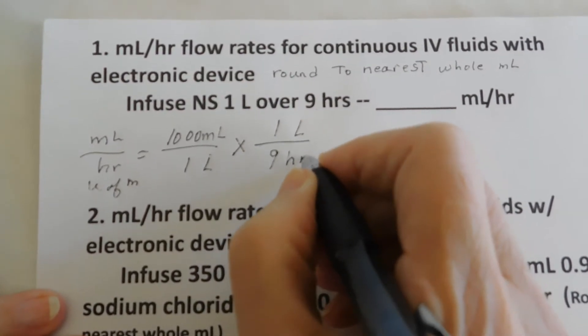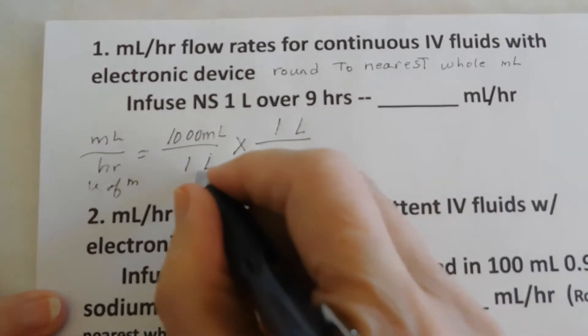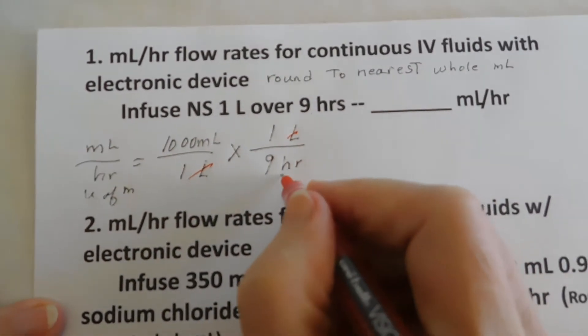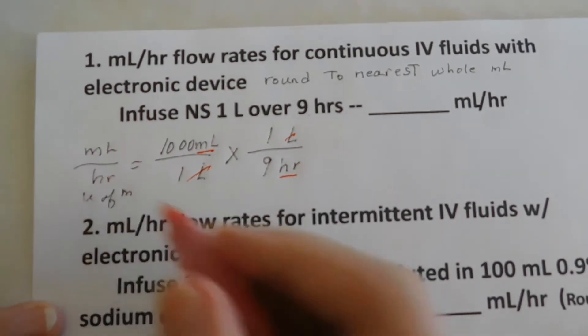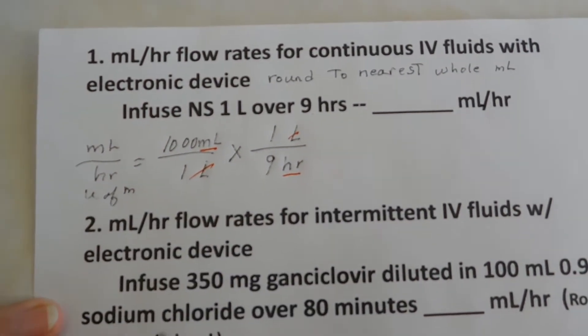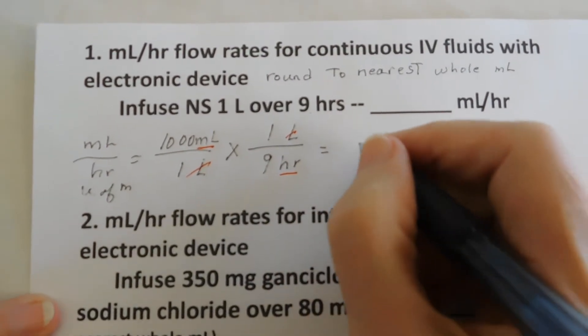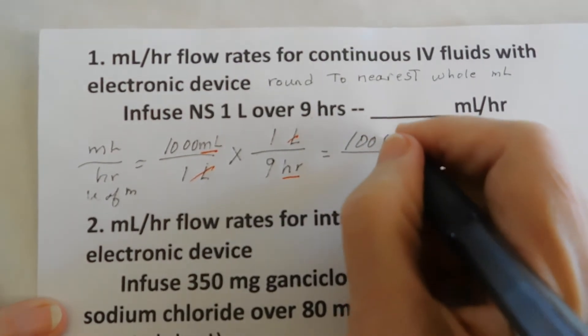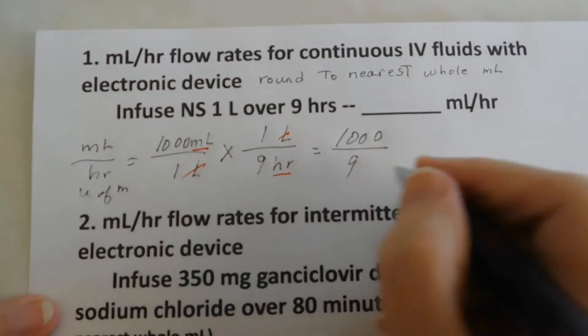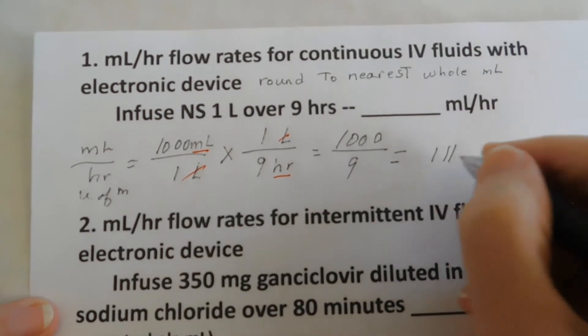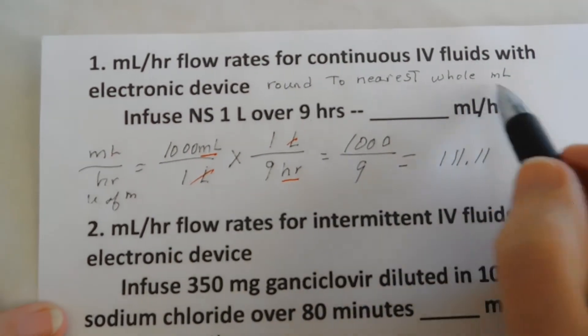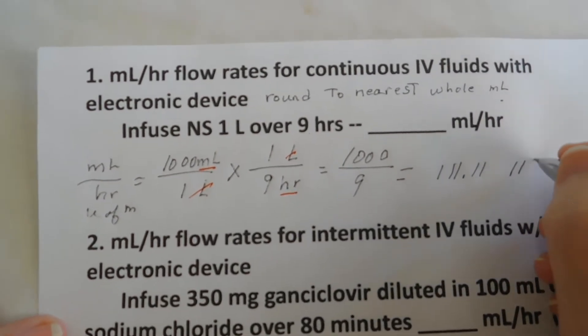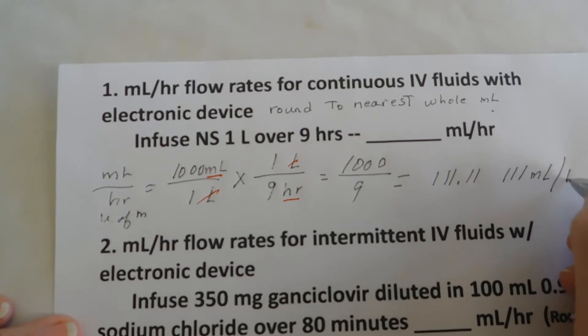Are we ready to solve? We are, because we can cross out liter. And all we have left is hour and milliliter. And that's our unit of measure. So we're going to solve. And we have one times one thousand is a thousand. And nine times one is nine, which equals 111.1. And we are rounding to the nearest whole milliliter. So that means we are 111 milliliters per hour.